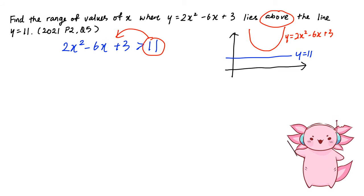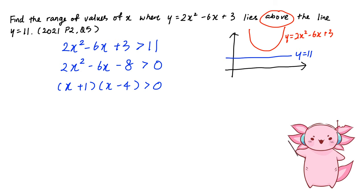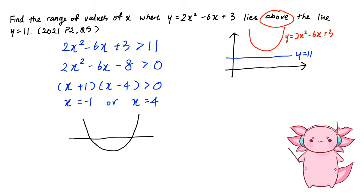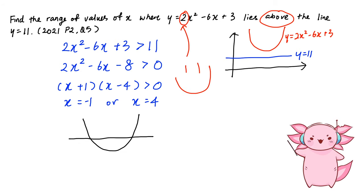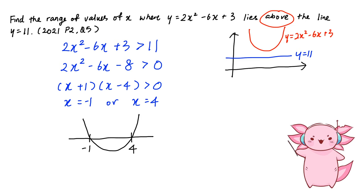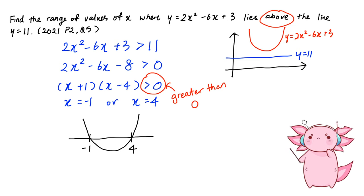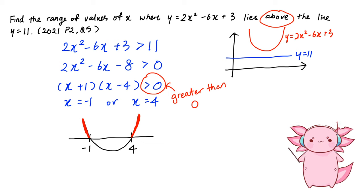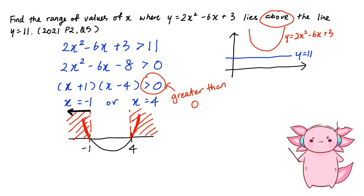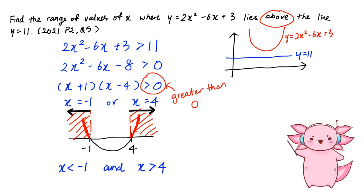So we move the 11 over to the other side. The next step is to factorize our quadratic, and we can use the calculator trick. Then we draw the graph — it's a smiley face because the coefficient of x-squared is positive, and the roots are negative 1 and 4. Our equation says greater than 0, so we're interested in the region above the x-axis. We shade those parts in red, and the answer is x < −1 or x > 4.